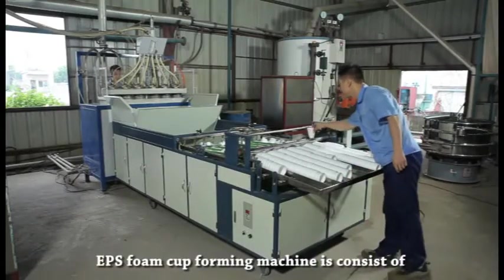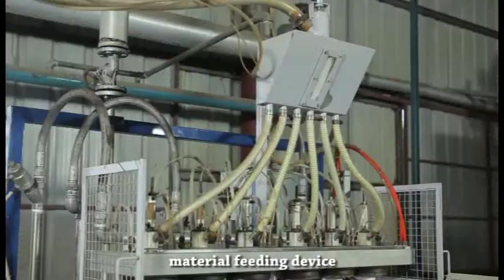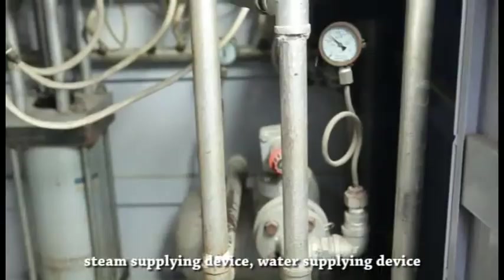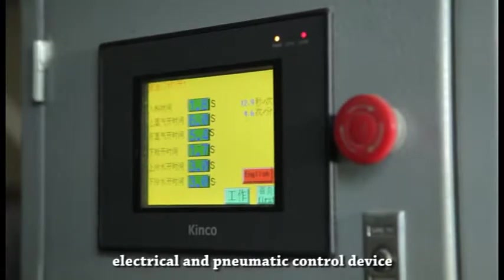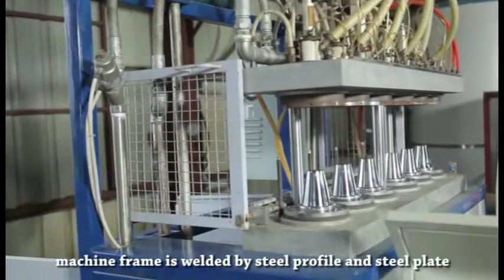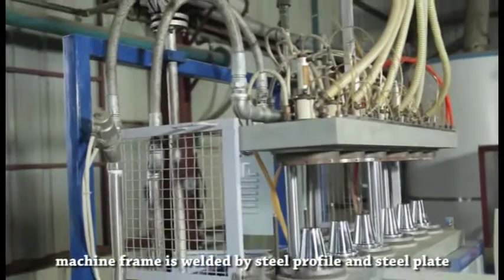The EPS foam cup forming machine consists of material feeding device, steam supplying device, water supplying device, and electrical and pneumatic control device. The machine frame is welded from steel profile and steel plate.